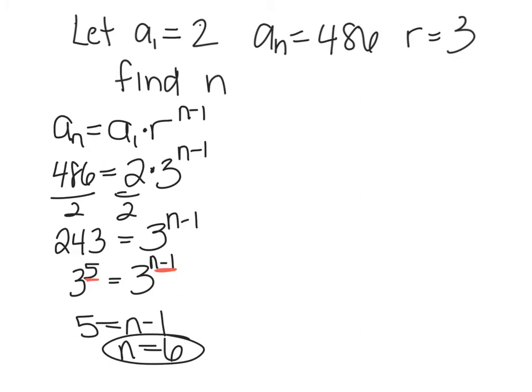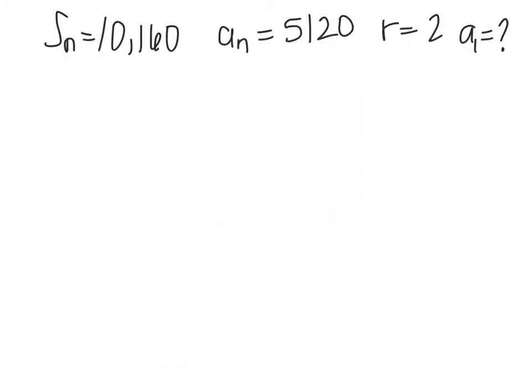Now, if I wanted to do a log instead, log base what? 3 of 243 equals N minus 1. The log base 3 of 243 is 5. So, N is 6. I promise I'll give you logs that you know. Well, that you're supposed to know. I just did it the other way.